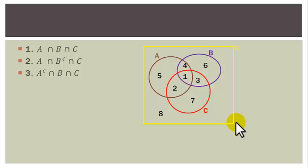Region 3 is A-complement intersection B intersection C — that is, part of B and C and outside A. Region 4 is A intersection B intersection C-complement — part of A and B, outside C.